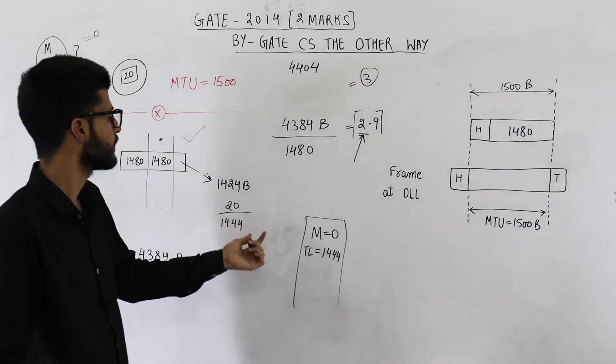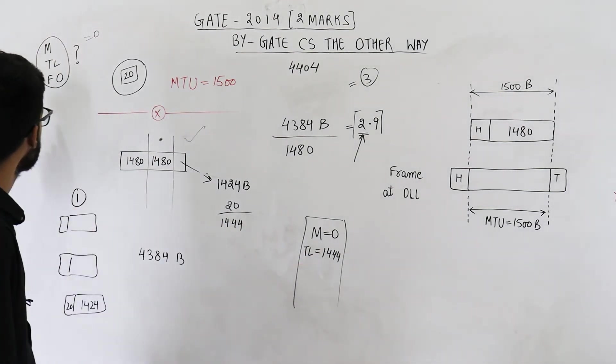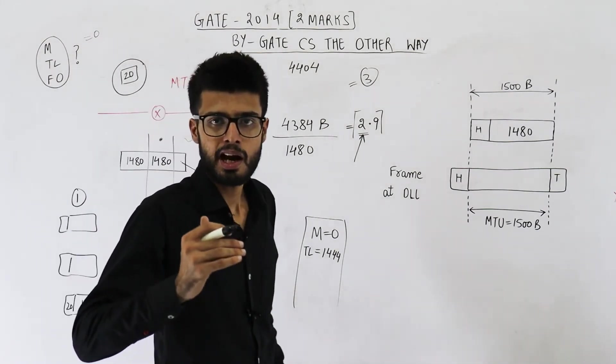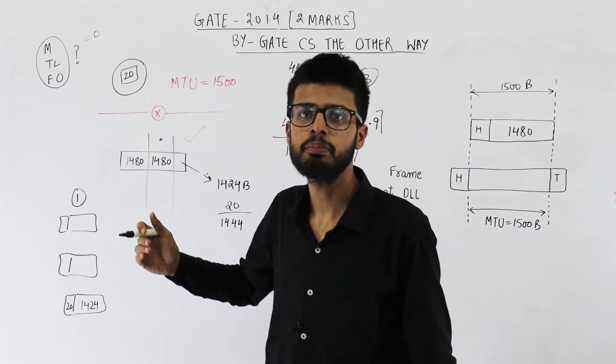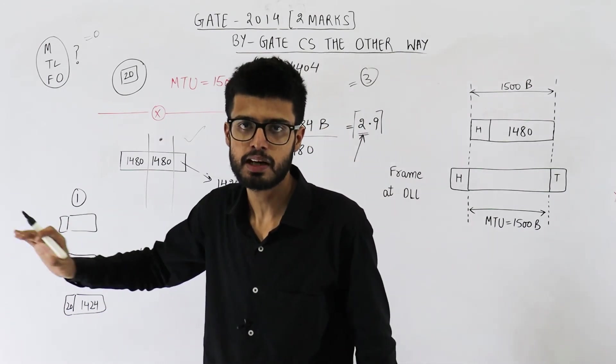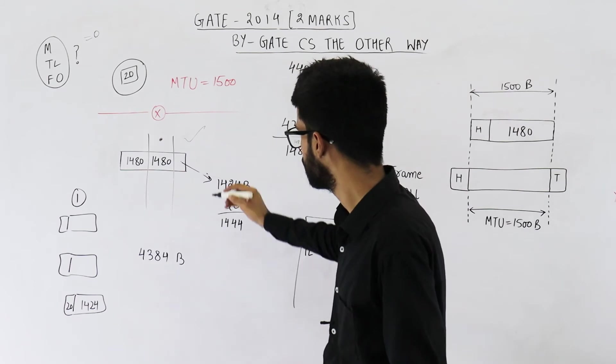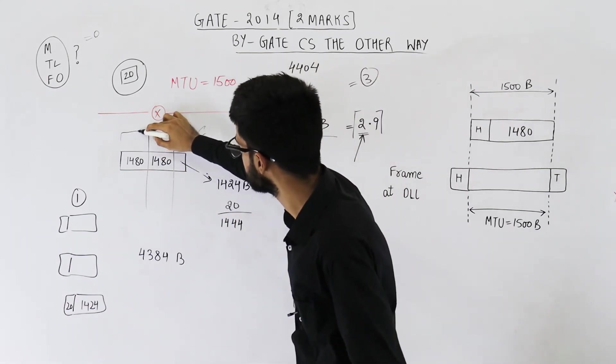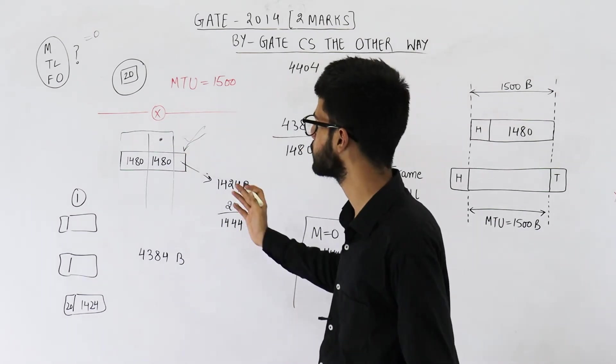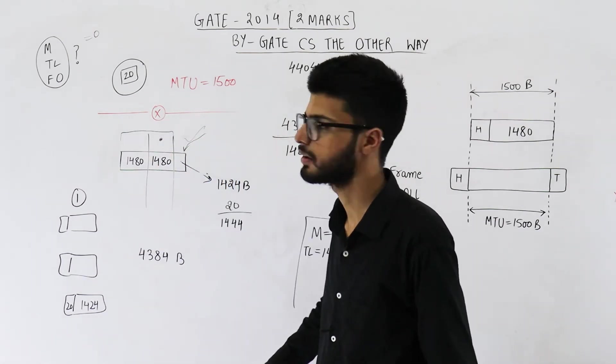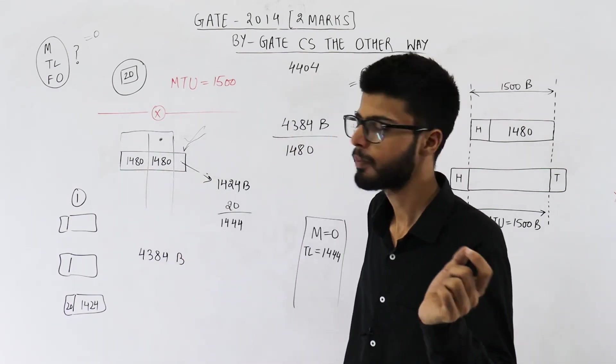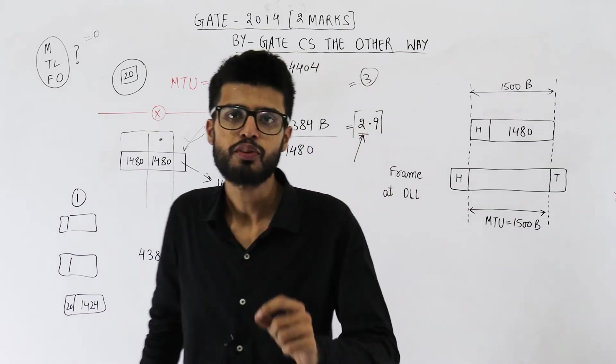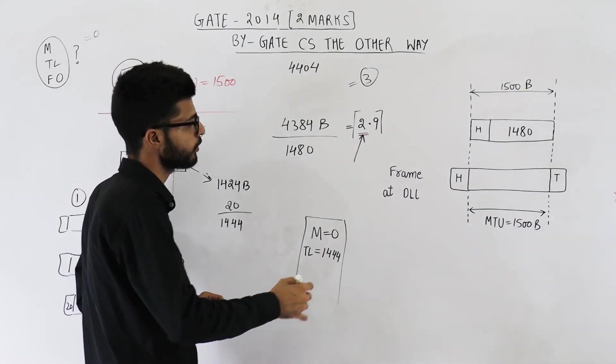Now the third thing that we need to determine is fragment offset. Fragment offset means how many bytes of data has already been transmitted in fragments that were created earlier. For this one, already two fragments are created, these two. How much data is present in the fragments that were created earlier? That is 1480 plus 1480, it will be 2960, right? Yeah, 2960. So fragment offset value is 2960.